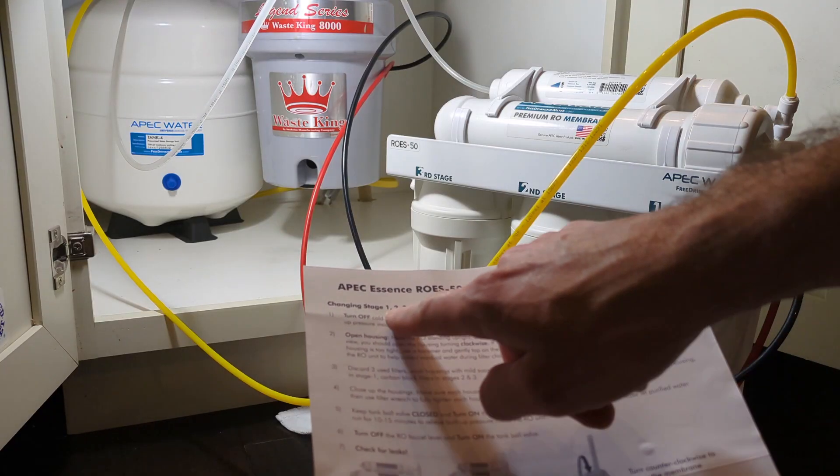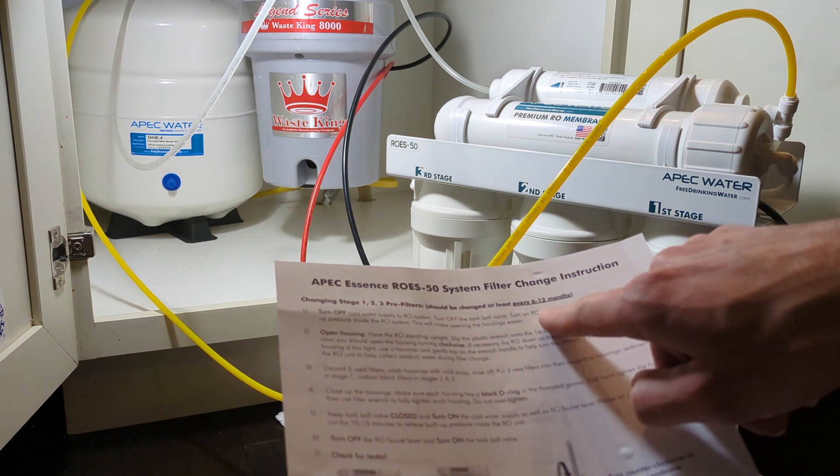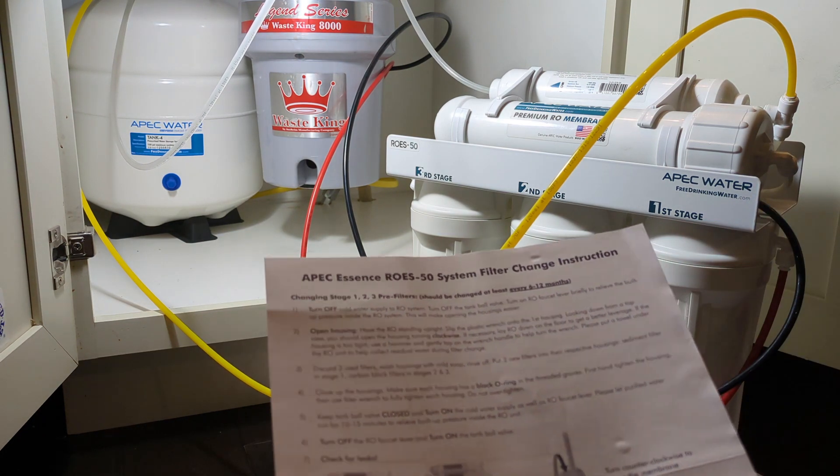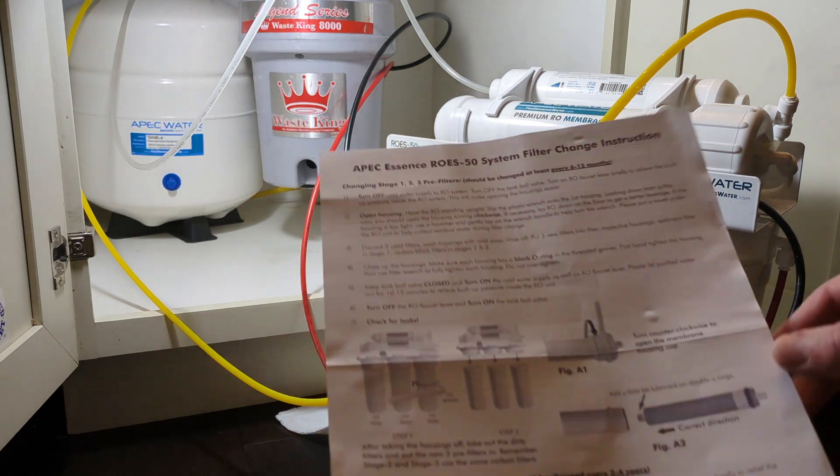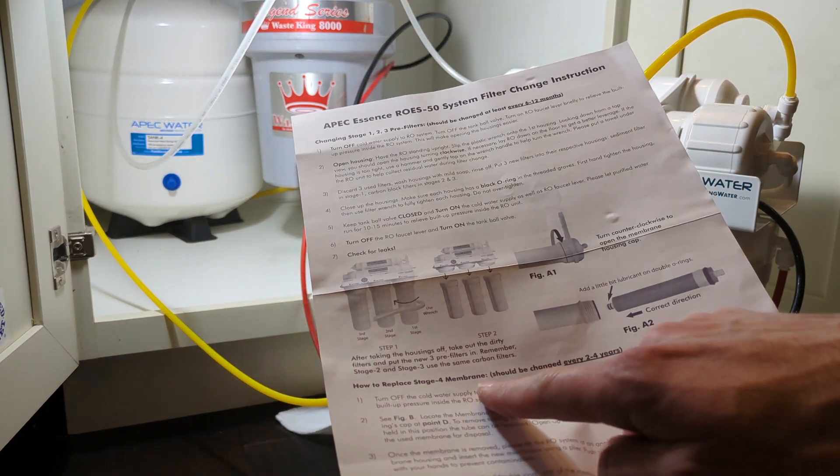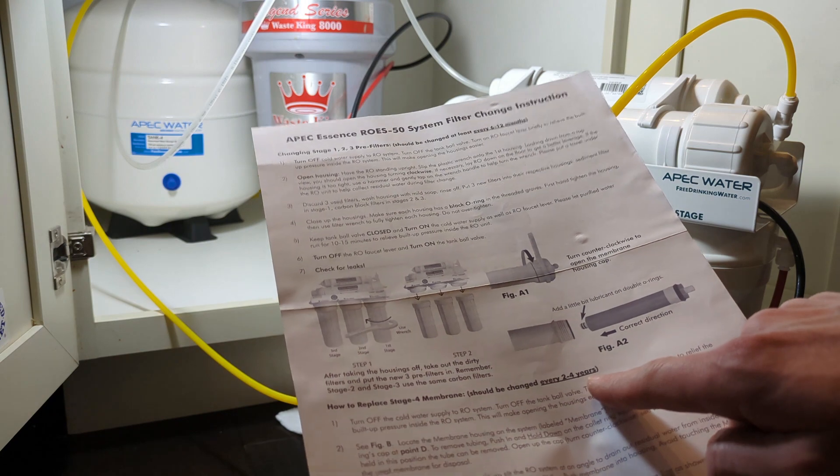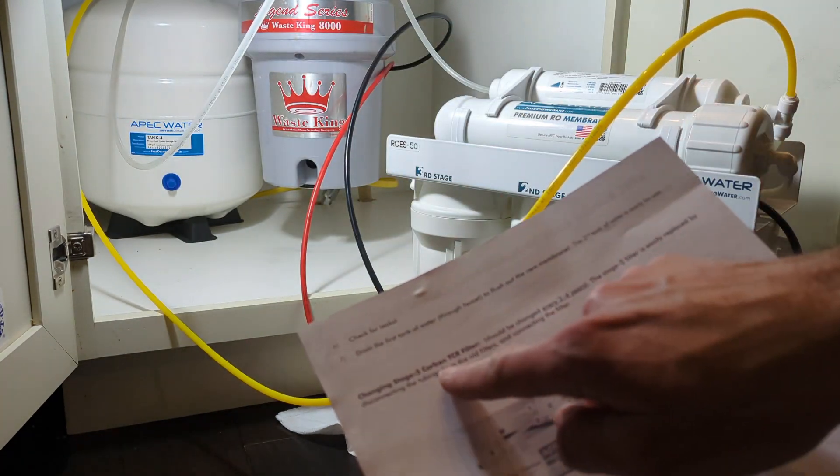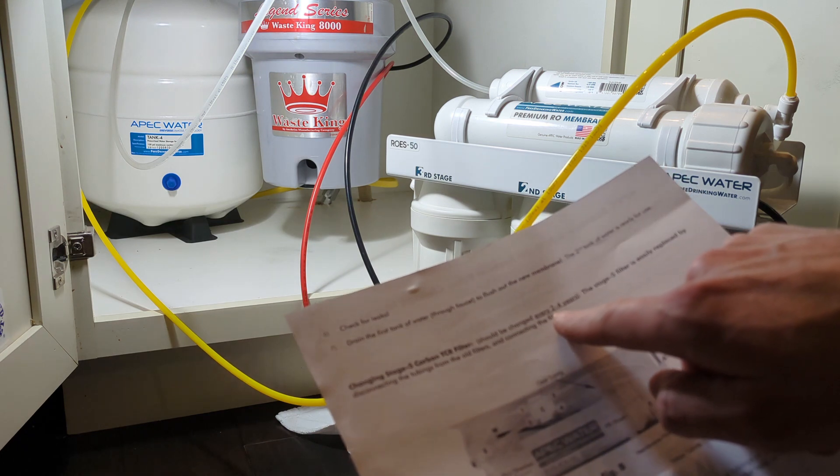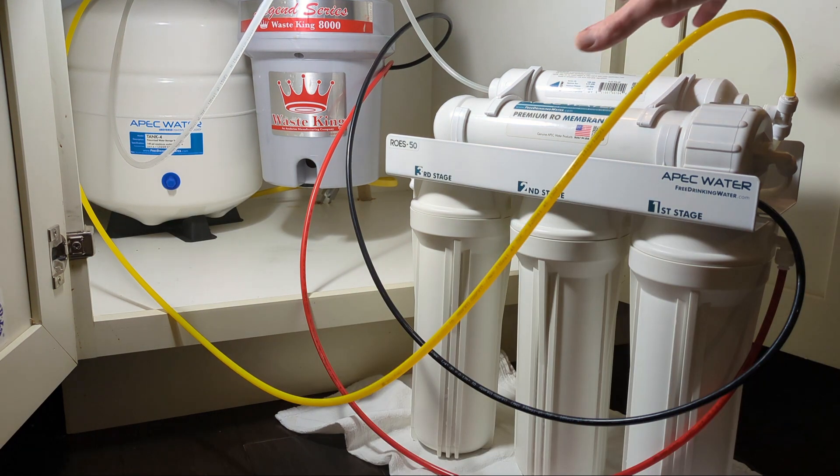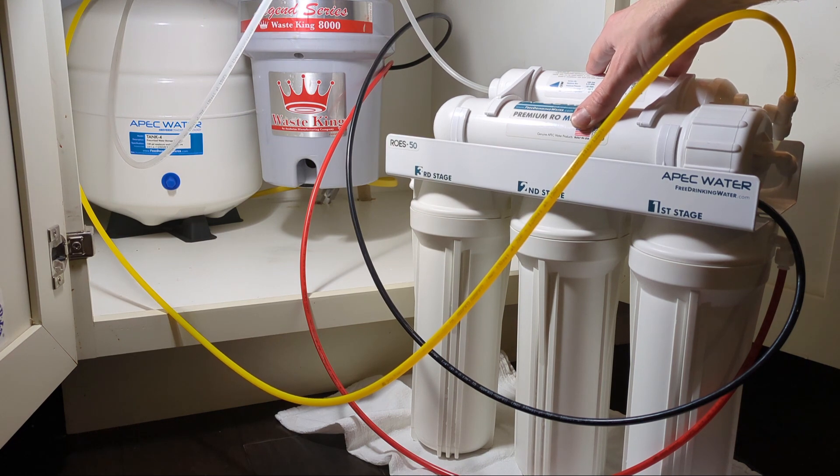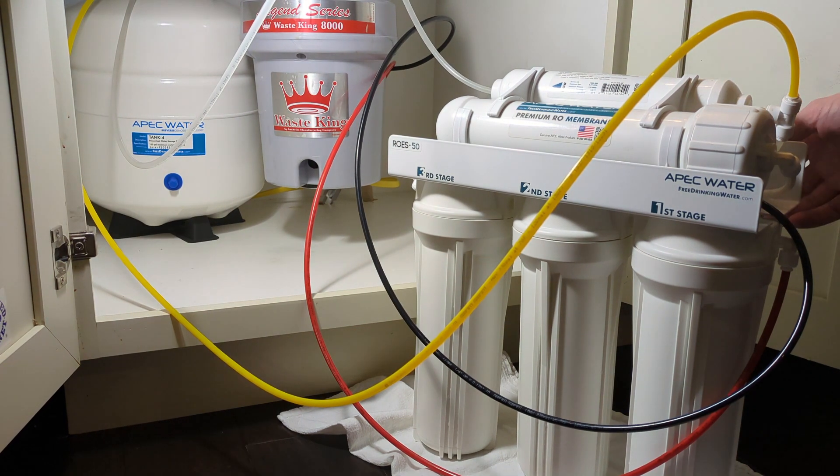Let's check again here. Yeah it says change filters stage 1, 2, and 3 every 6 to 12 months. I change them once a year, highly depending on how much water you're actually using. And again the stage 4 membrane every 2 to 4 years. Same for the stage 5 carbon TCR filter. Change every 2 to 4 years. So those stage 4 and 5 filters I'll be changing those out next year. I'll get a video when that's finished. I'm confident there's no leaks here.